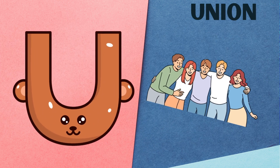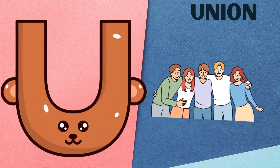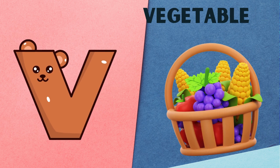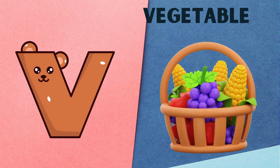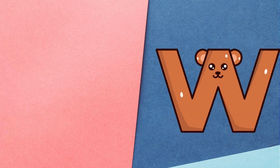U is for union, u, u, union. V is for vegetable, v, v, vegetable.